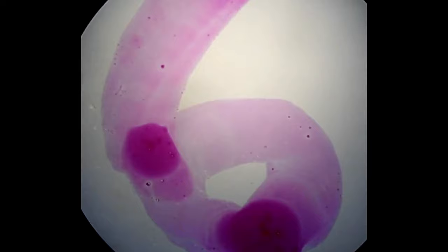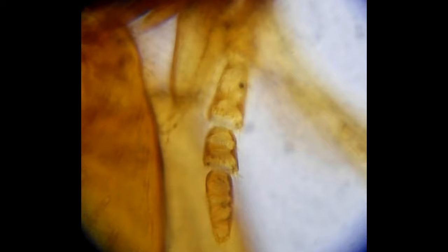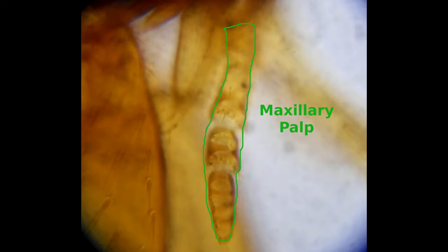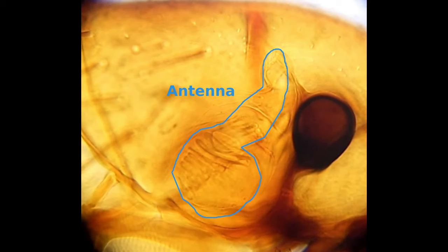Number six, the sensory organs of the head. The flea has two pairs of sensory organs on its head. The most foremost are the maxillary palps which are right next to the feeding apparatus.